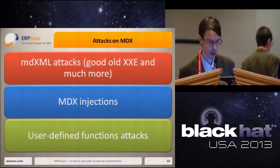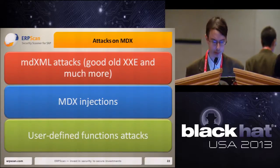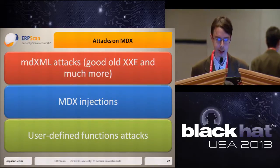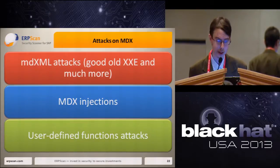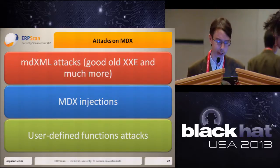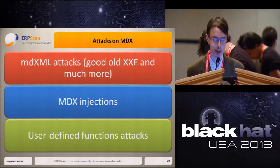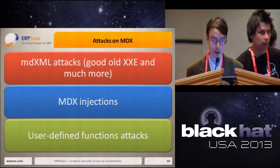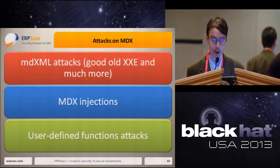Now we know enough to plan how we can attack MDX. Imagine we have a vulnerable application that fails to filter user input and processes it directly into parts of an MDX query. What are the vectors we have? We can attack XMLA with good old XXE injections and other XML attacks. We can use pure MDX injections to gather or even modify sensitive data not supposed to be accessible. Also we can use MDX extensions — user-defined functions — to expand the attack and even get remote code execution on the vulnerable system.